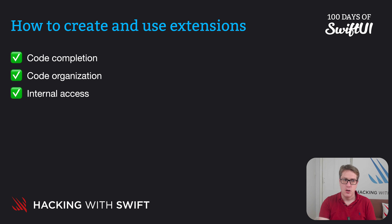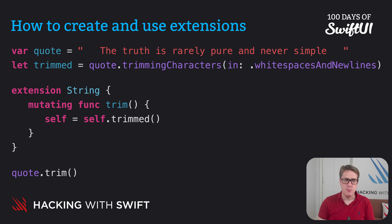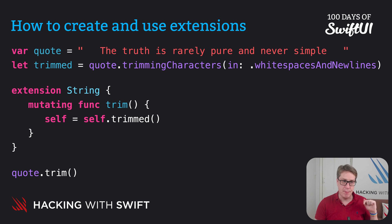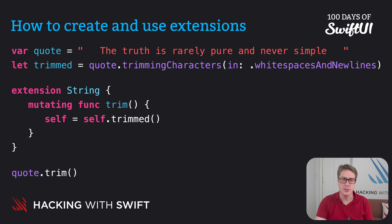What's more, these kinds of extensions make it easier to modify values in place — to change a value directly rather than return a new value. For example, we can write a trim method that calls our trimmed extension method internally, but now trim is marked mutating because it applies the result back to self: self = self.trimmed. So we can modify the string directly by calling quote.trim — it removes the whitespace and puts it back into quote.